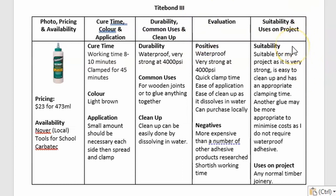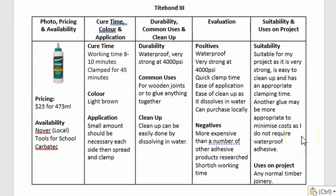The last column is dedicated to suitability and uses on project. Suitability outlines how suitable the adhesive is for the set project. For example, I have stated that Titebond 3 is suitable for my project as it is very strong, is easy to clean up, and has an appropriate amount of clamping time. However, I have stated that another glue may be more appropriate to minimize costs as I do not require a waterproof adhesive. Under the heading 'Uses on Project', I've simply stated that it could be used for any normal joinery.